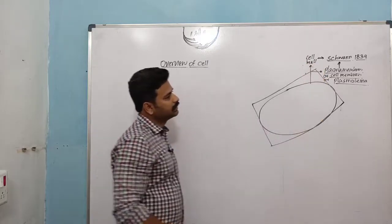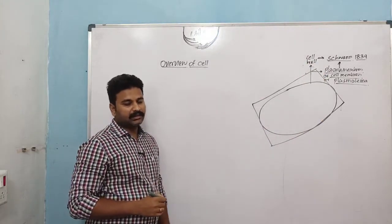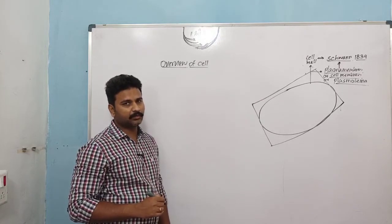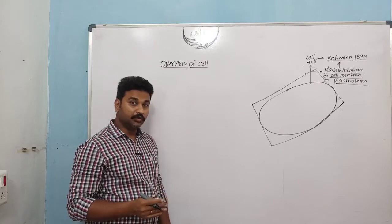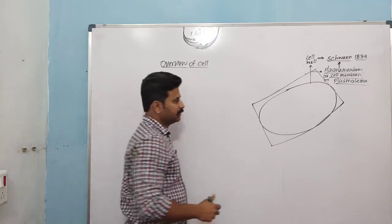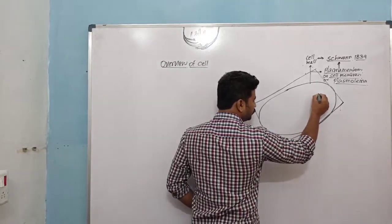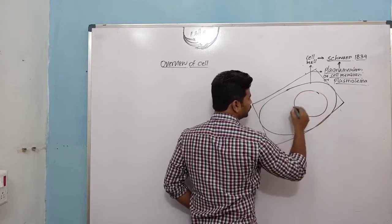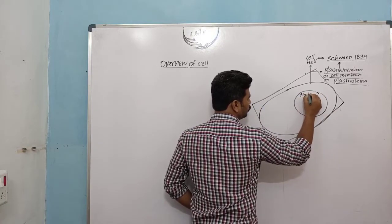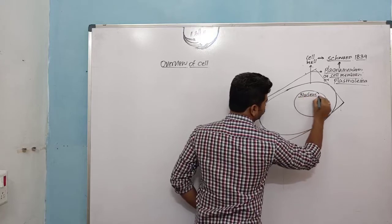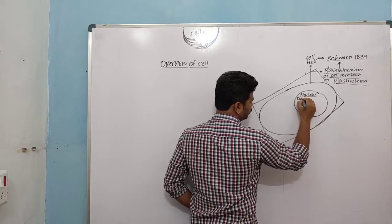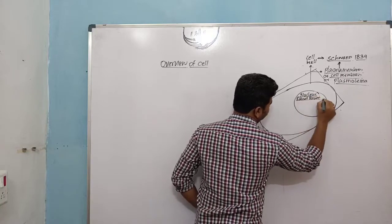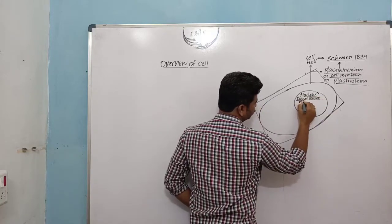In the year 1831, the scientist Robert Brown identified that inside the cell there is also a nucleus. The scientist was Robert Brown, and the year was 1831.